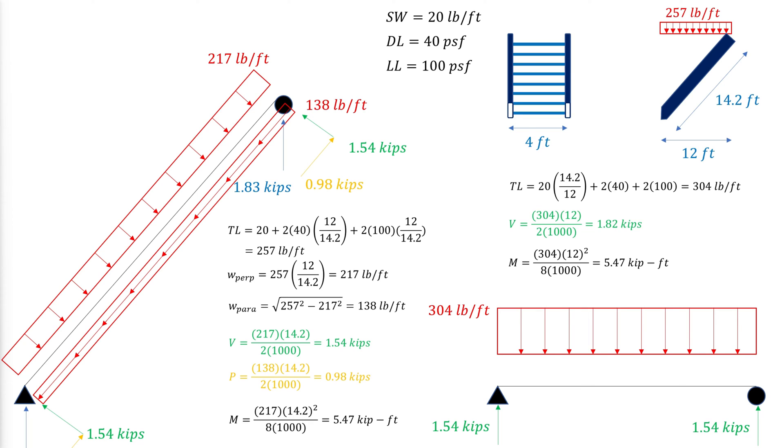The horizontal plane method is commonly used to determine the required shear and flexural strength for inclined beams. This approach is simpler and provides an equivalent required flexural strength and conservative available shear strength compared to the sloping beam method.